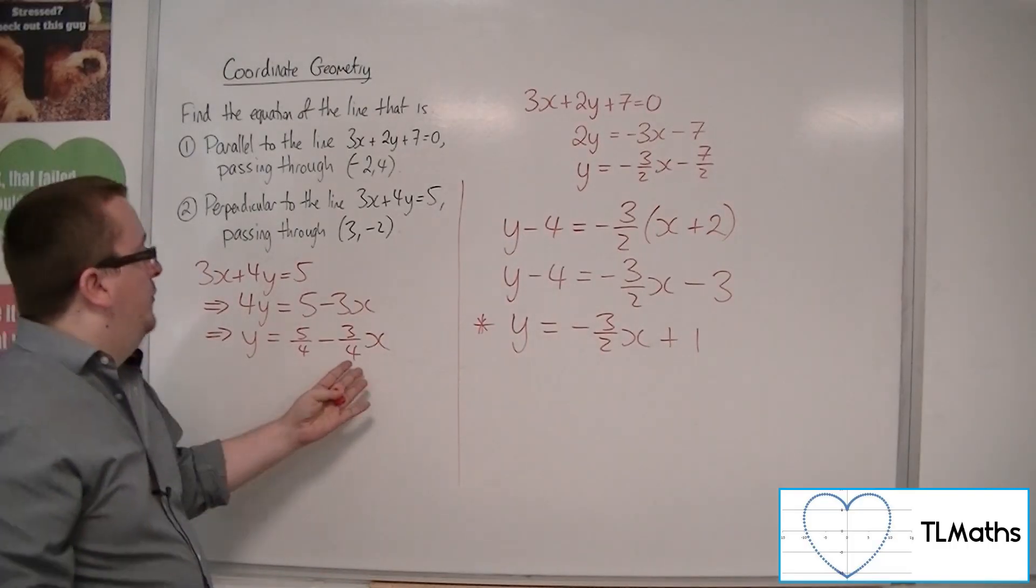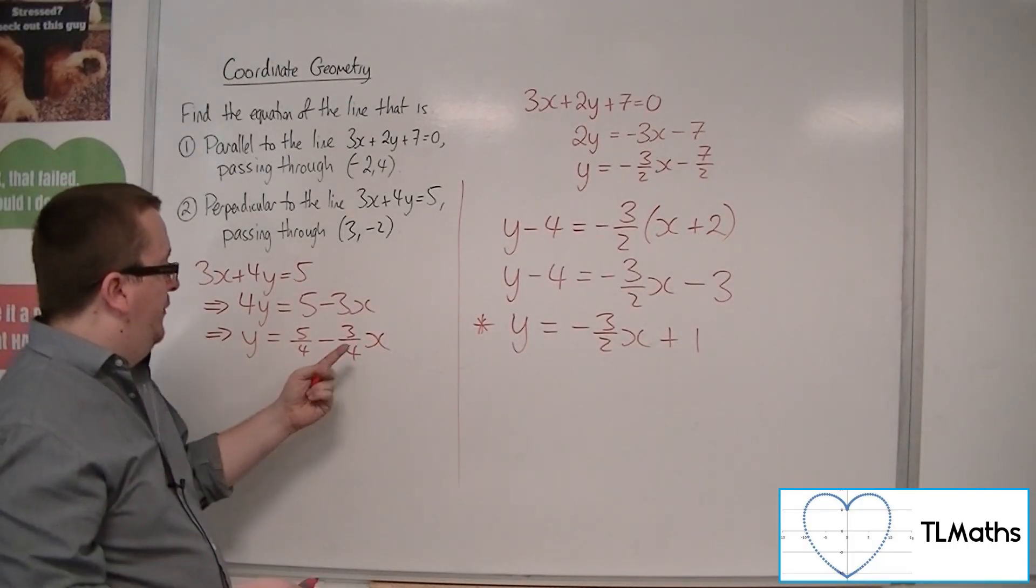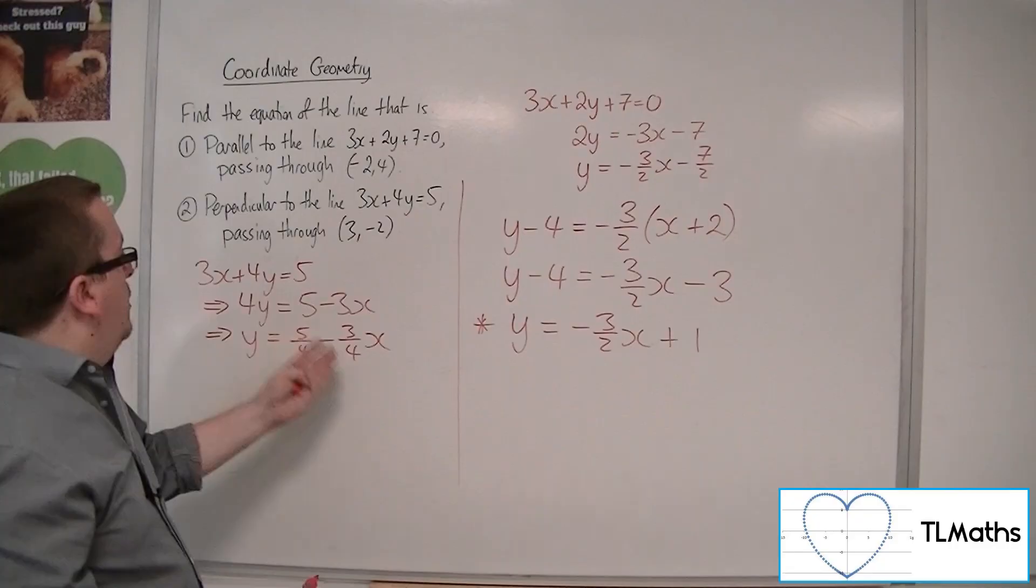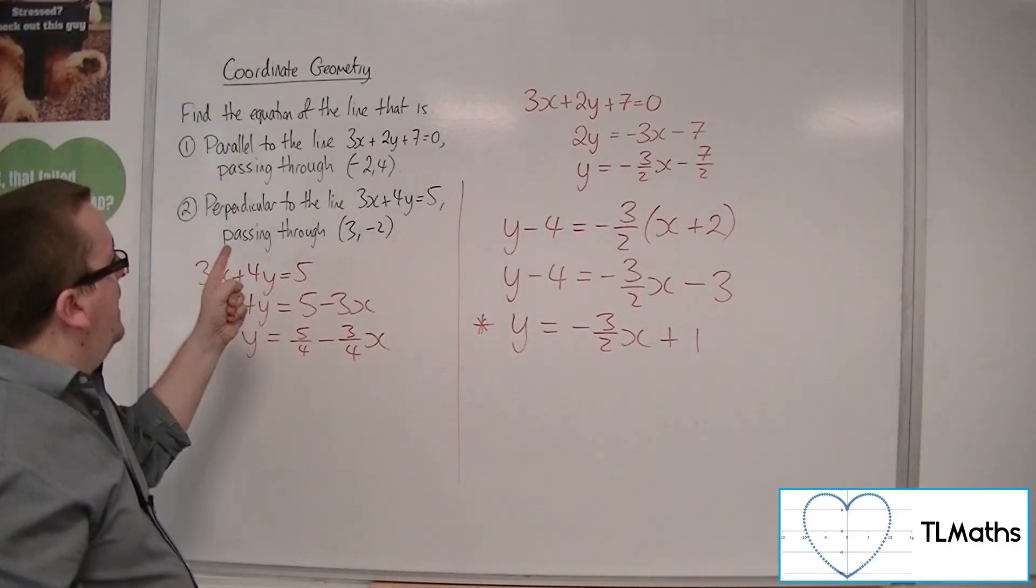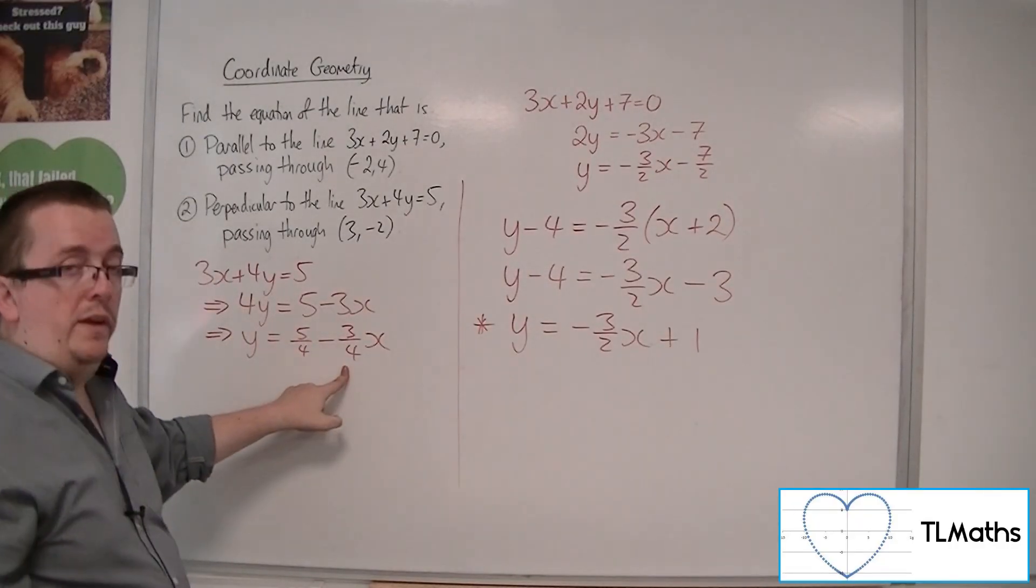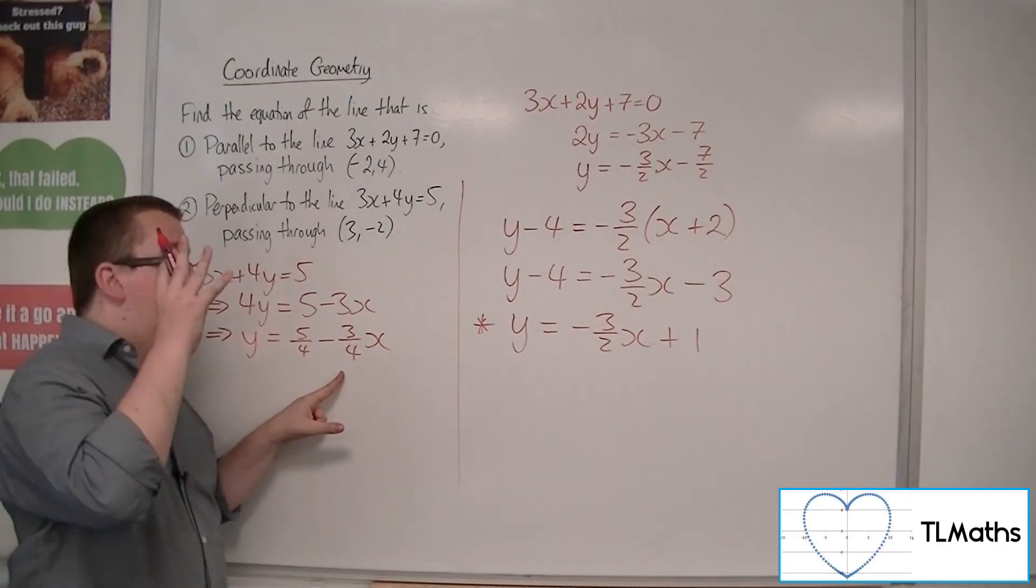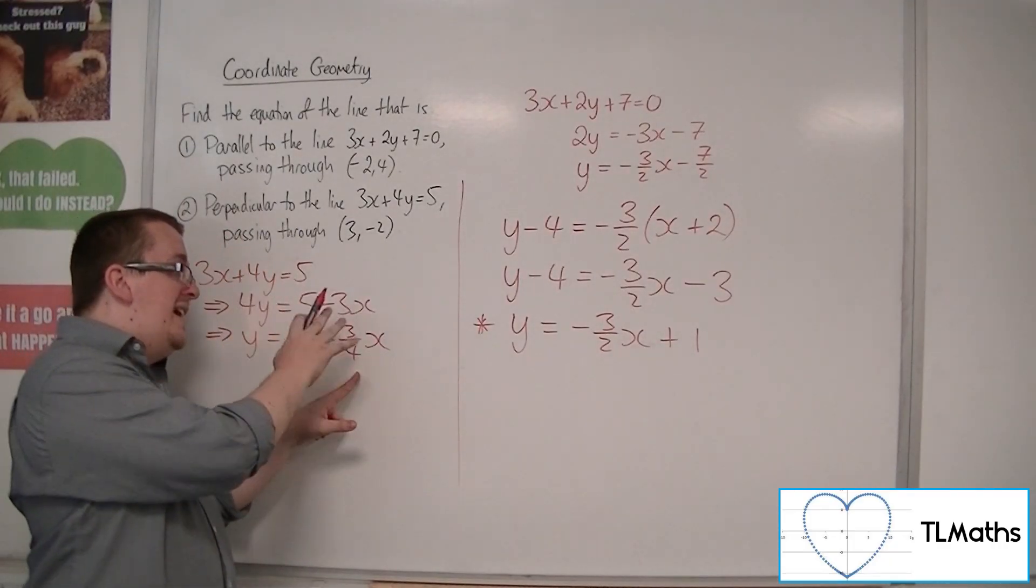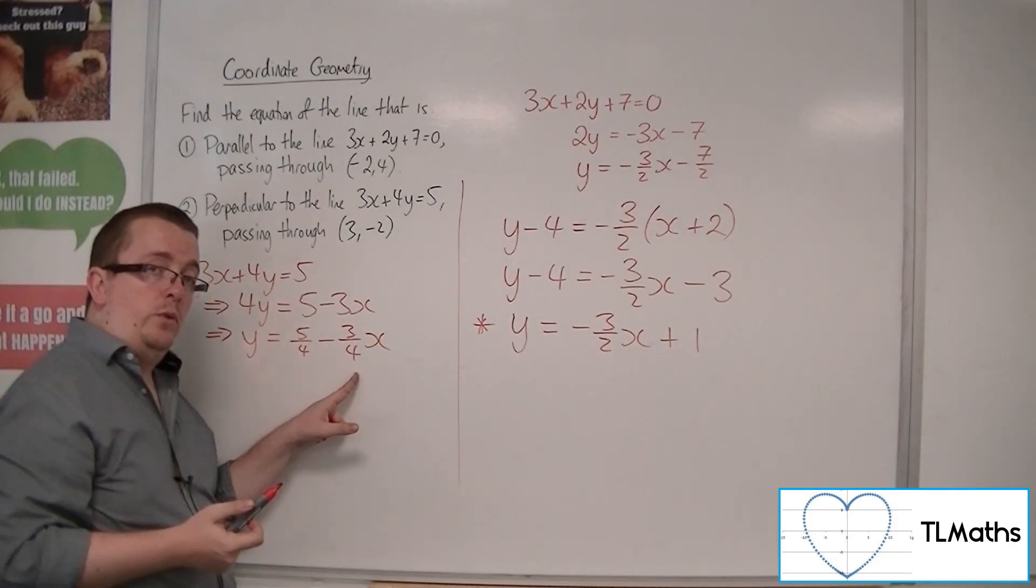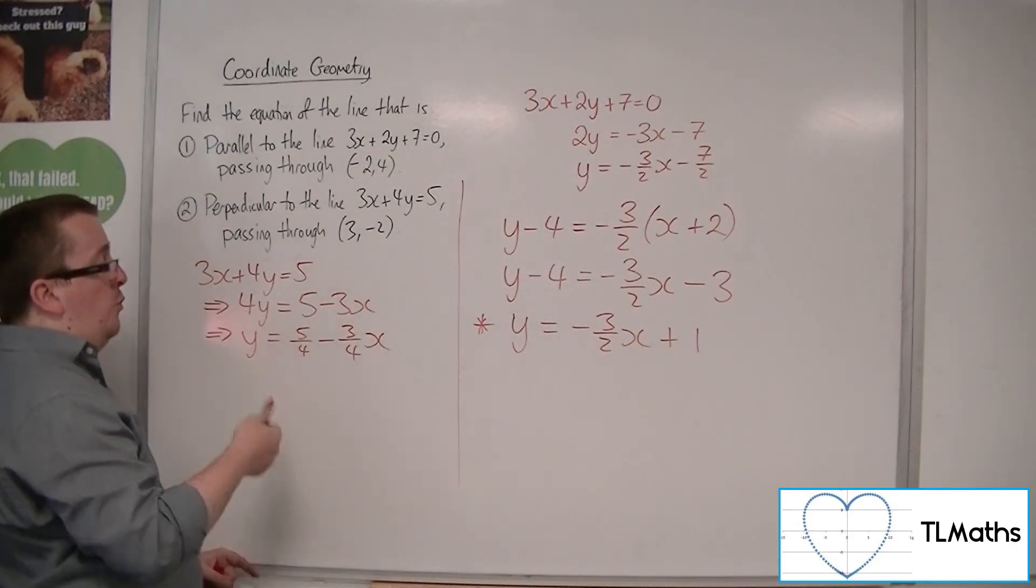Now it's this minus 3 quarters I'm interested in, not the 5 quarters, I just want the gradient here, but I want the line that I'm getting to be perpendicular to this one, and so it must have the gradient that is the negative reciprocal of minus 3 quarters. So that would be 4 thirds.